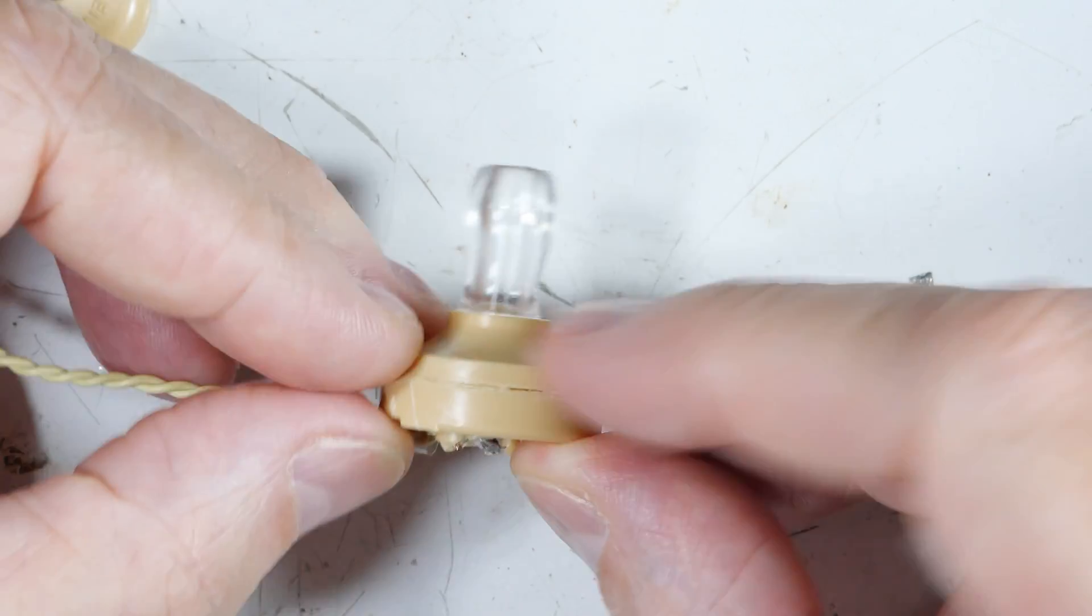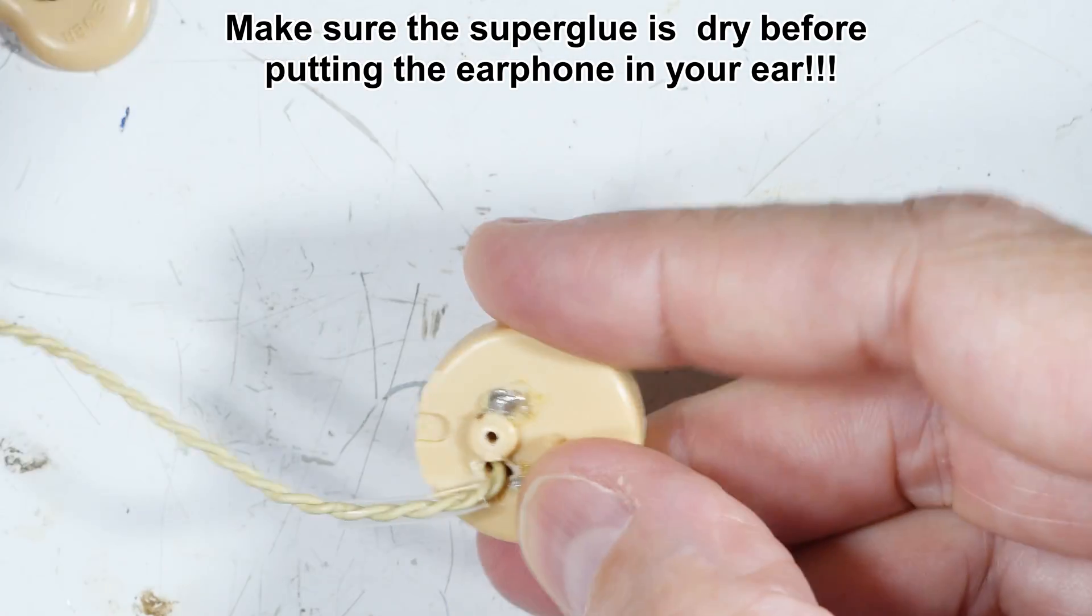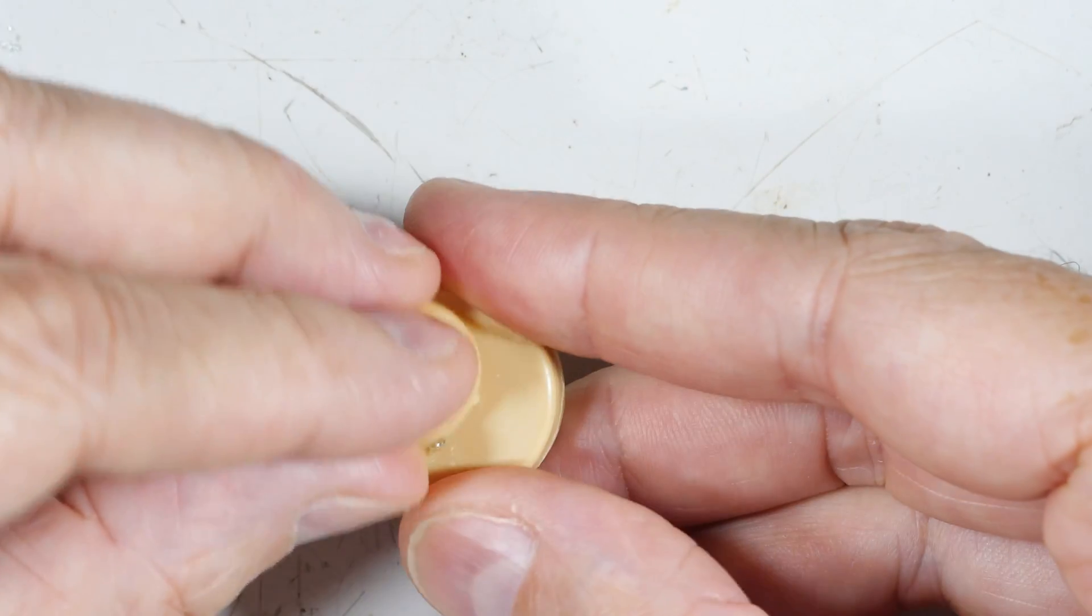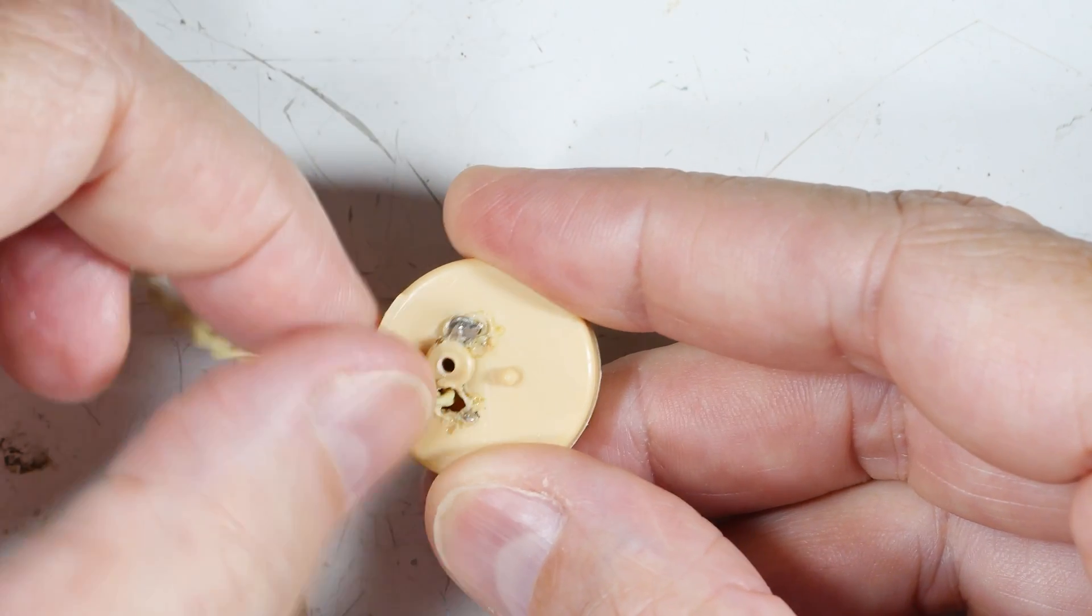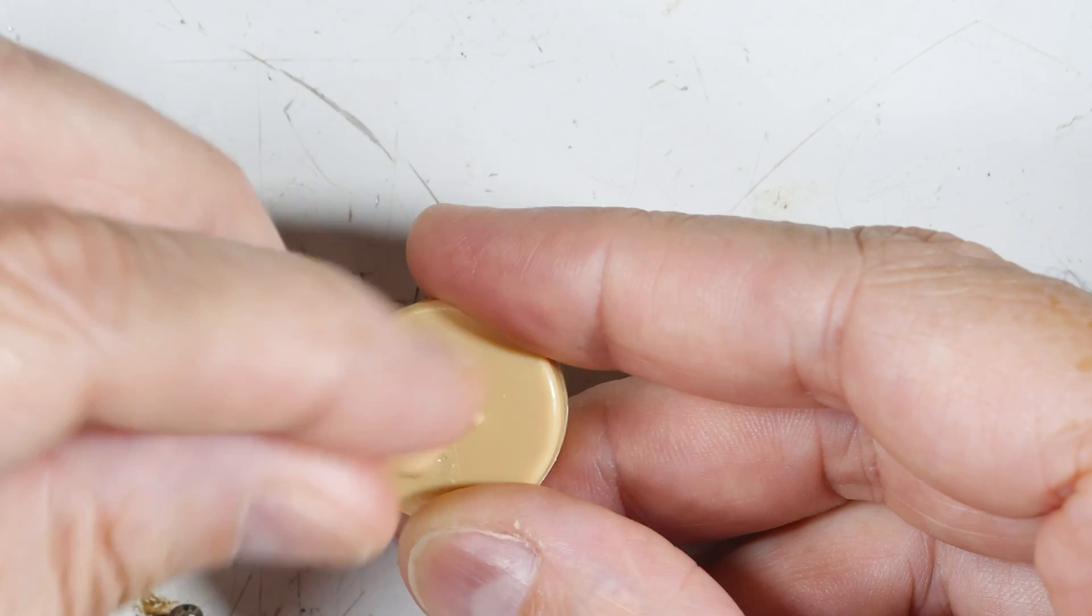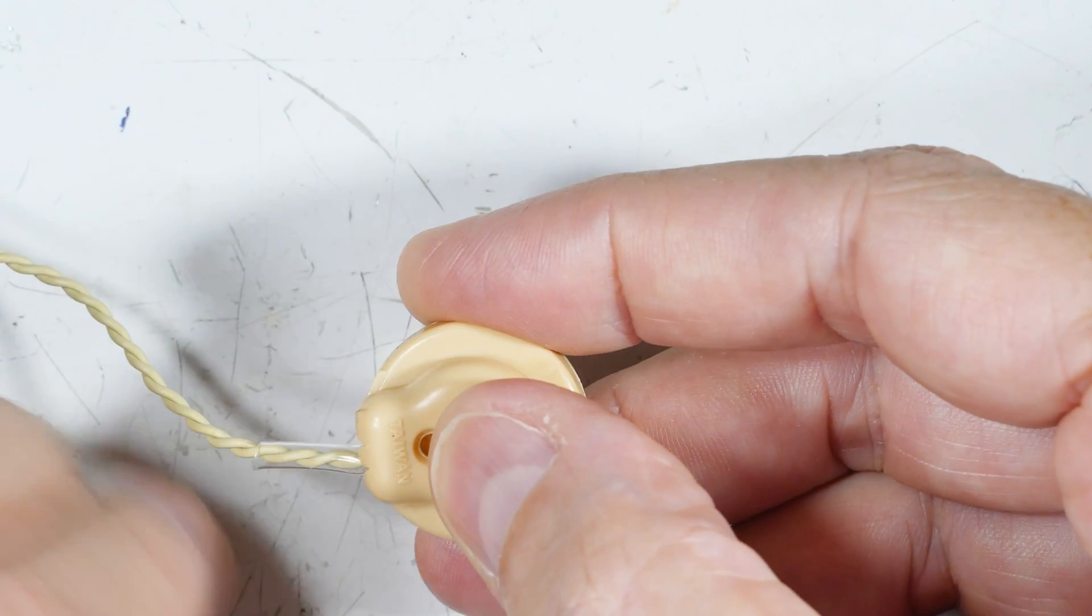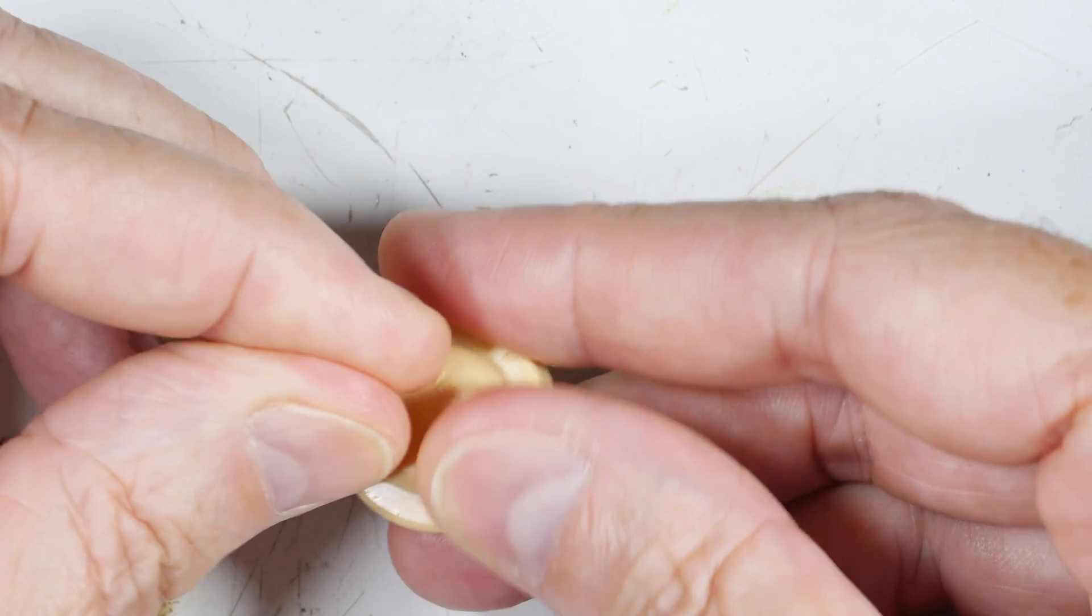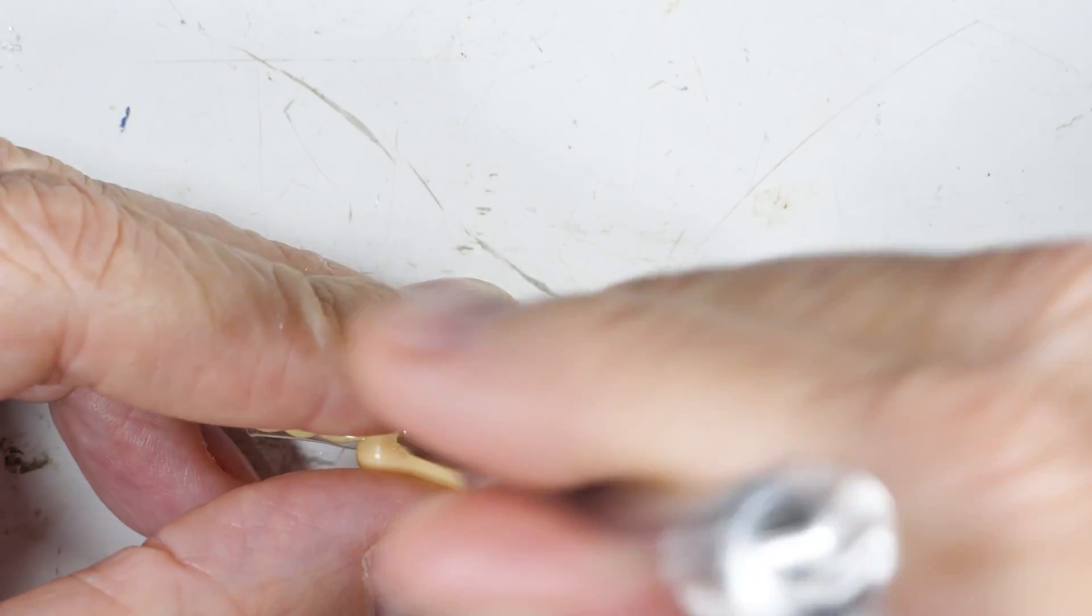And then we'll put one drop of super glue on there to hold it. Then we just reattach our back like this. This is the strain relief, this little tube right here. Just gotta make sure that's in the right place. Put this thing back on here, this retainer piece, then we do the screw like that.